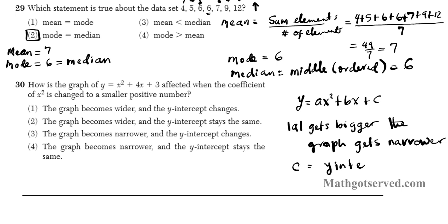So in this problem, we are told that a is getting smaller. It's a smaller positive number. So if a is getting smaller and it's positive, so we don't have to consider the absolute value. Since a is getting smaller, that means that the graph is going to get wider. Because there's an inverse relationship. If a gets bigger, the graph gets narrower. If a gets smaller, the graph gets wider. So in this case, a is getting smaller, so the graph is going to get wider. So we're going to take out options 3 and 4.